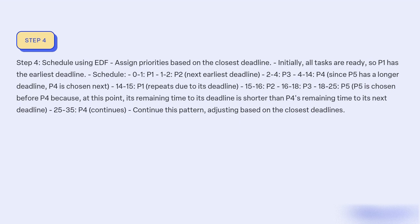EDF continued: 14–15: P4. 15–16: P1 (repeats due to its deadline). 16–18: P2. 18–25: P3. P5 is chosen before P4 at this point because its remaining time to its deadline is shorter than P4's remaining time to its next deadline. 25–35: P4 continues. Continue this pattern, adjusting based on the closest deadlines.